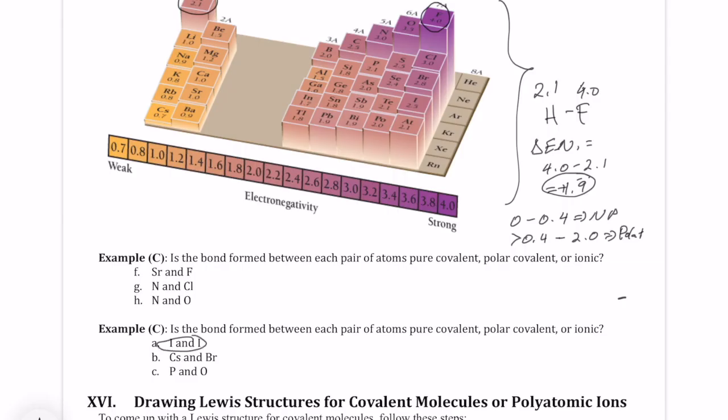If you look at I and I, you know that the delta EN or the difference in electronegativity is going to be zero because it's the same electronegativity value. And as a result, this bond is going to be nonpolar.